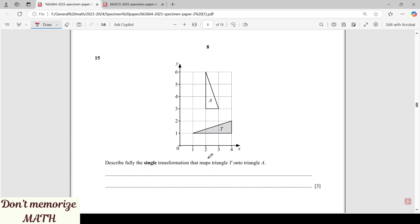Describe fully the single transformation that maps T onto triangle A. This is a 3 mark question, so we need to write minimum 3 points.